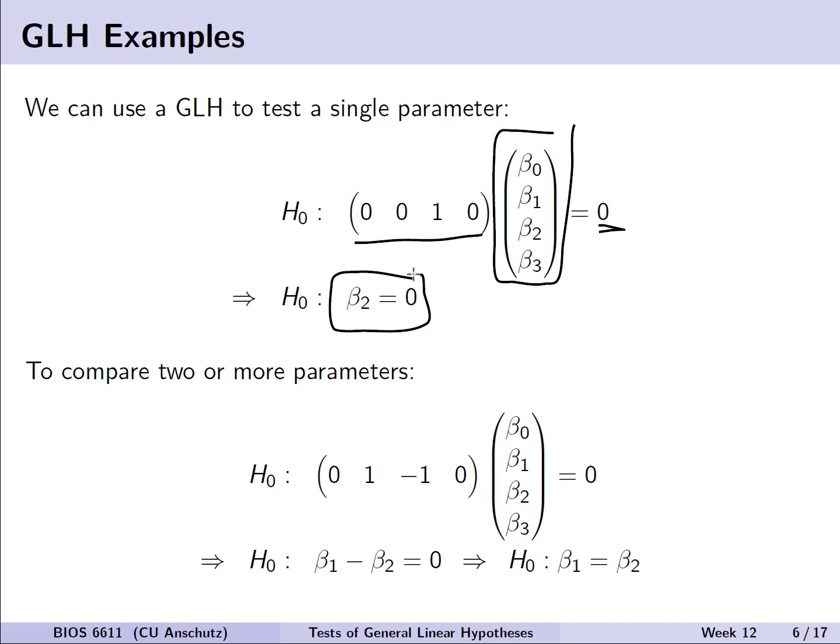Likewise, we can actually compare two parameters, perhaps beta 1 minus beta 2, by just expanding and changing that C matrix, or again in our case a vector, and then multiplying them together to see that we have beta 1 minus beta 2 equals 0, or equivalently, we're testing the null hypothesis that beta 1 is equal to beta 2.